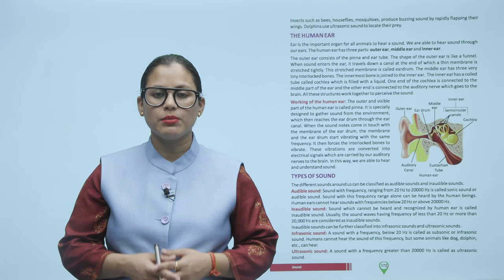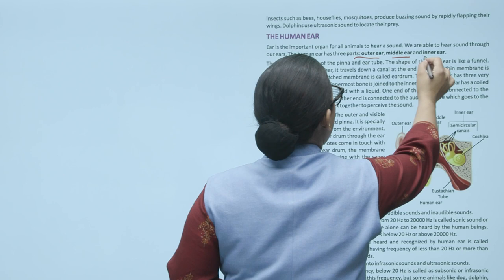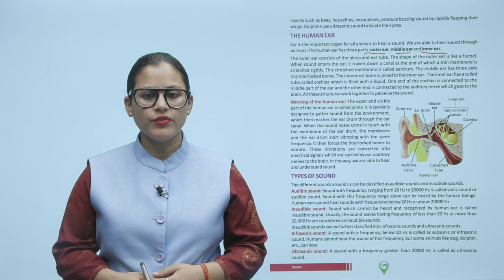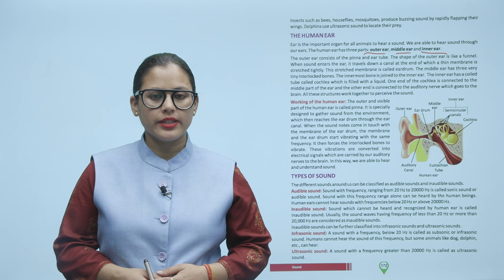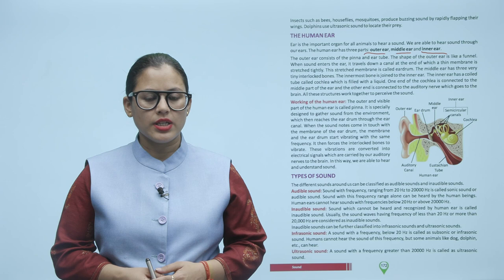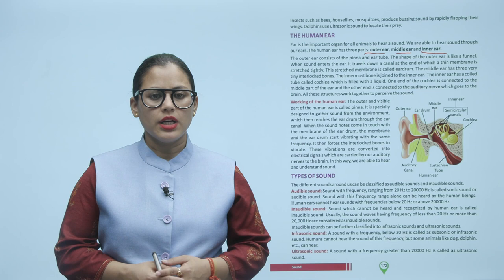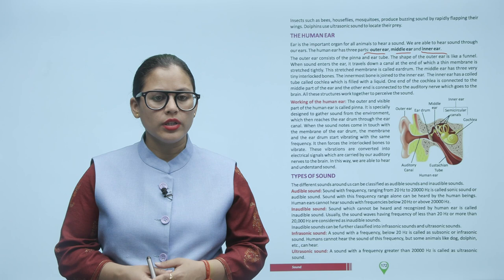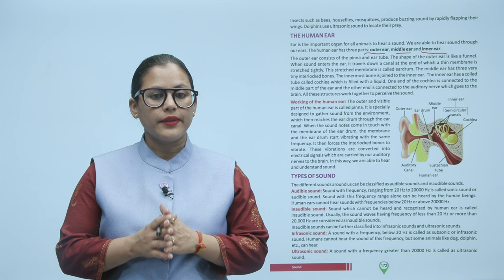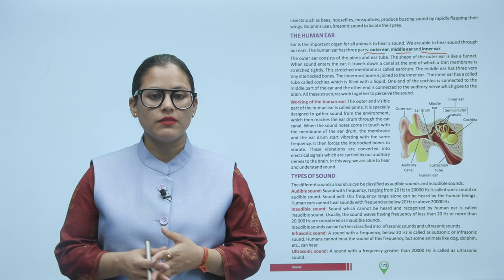The human ear. The ear is an important organ for all animals to hear sound. The human ear has three parts: outer ear, middle ear, and inner ear. The outer ear consists of the pinna and ear tube, shaped like a funnel. When sound enters the ear, it travels down a canal at the end of which a thin membrane is stretched tightly — this stretched membrane is called the eardrum. The middle ear has three very tiny interlocked bones. The innermost bone is joined to the inner ear. The inner ear has a coiled tube called the cochlea, which is filled with liquid. One end of the cochlea is connected to the middle part of the ear, and the other end is connected to the auditory nerve which goes to the brain.